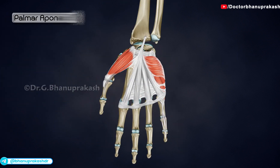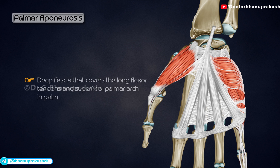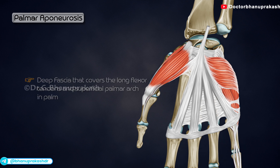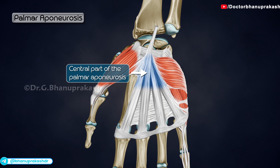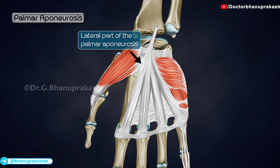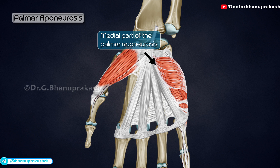The palmar aponeurosis is deep fascia that covers the long flexor tendons and superficial palmar arch in the palm. It consists of three parts: the central part, which is thick and is the palmar aponeurosis proper; the lateral part, which is thin and covers the thenar muscles; and the medial part, which is also thin and covers the hypothenar muscles.